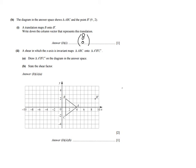Considering the x-axis is the invariant line, that means point A is not going to move — nothing happens on the invariant line. So A is also A apostrophe. Make sure you label that.